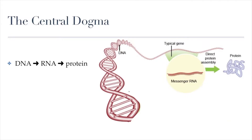Before we delve into the details of how protein synthesis occurs, let's take a very big picture view by looking at what in biology we call the central dogma. The central dogma sounds really important, and that's because it is. It's basically the idea that drives how our genetic code can drive the production of proteins, which then determine what we look like, who we are, how we act, and everything about us. The flow of information is very simple: DNA to RNA to protein. That's the big picture.